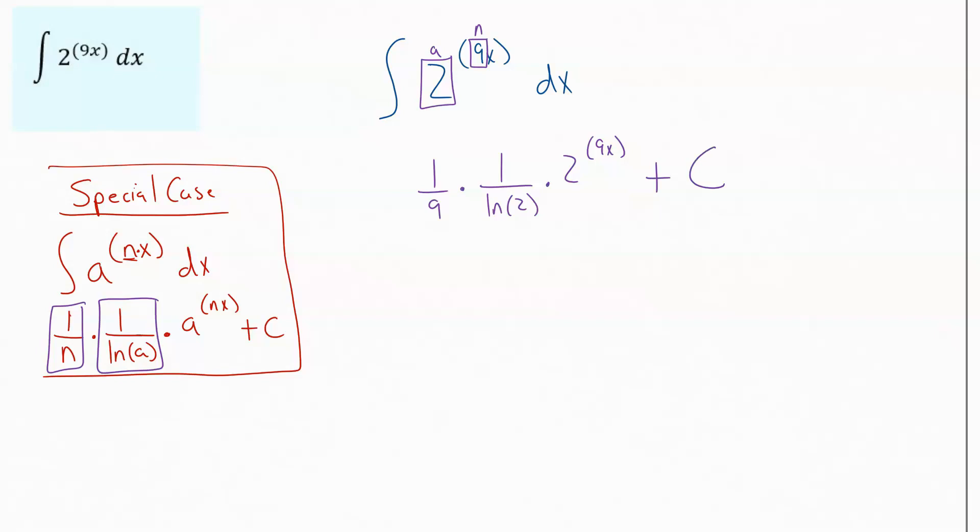And then whenever we're dealing with indefinite integrals, we always put a plus c at the end to track the fact that this is a family of solutions. We don't know specifically what that c value is, but we know there could have been a constant there.